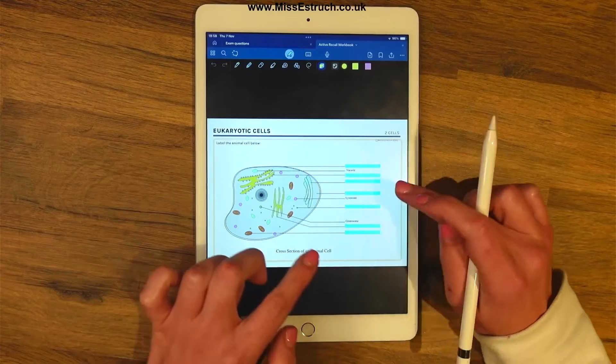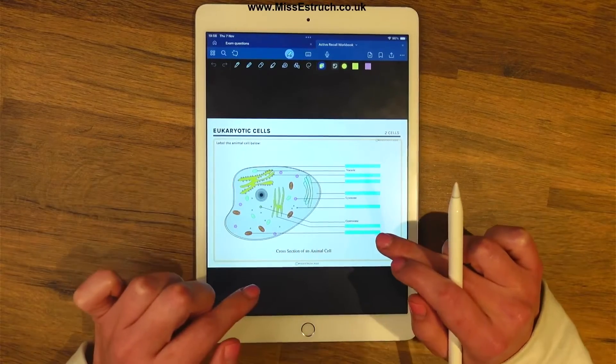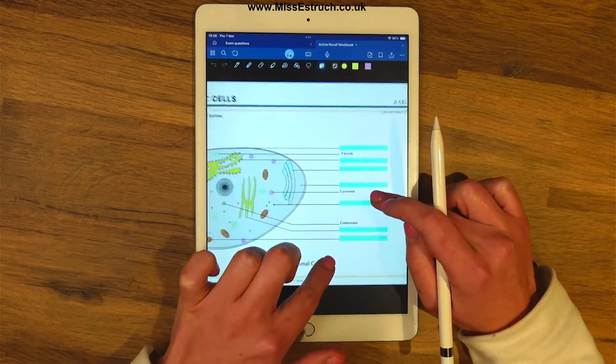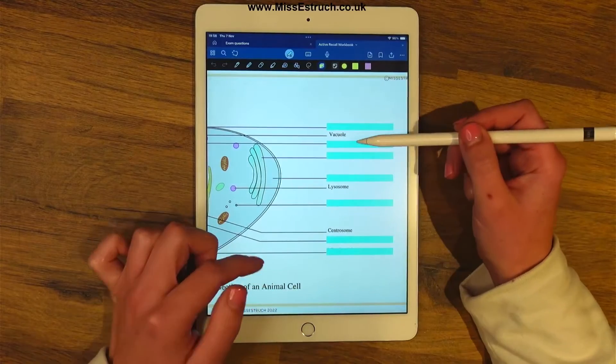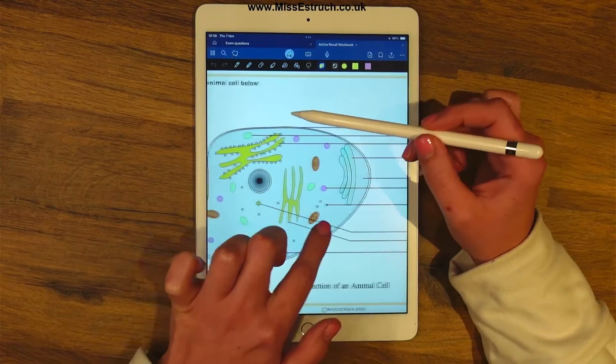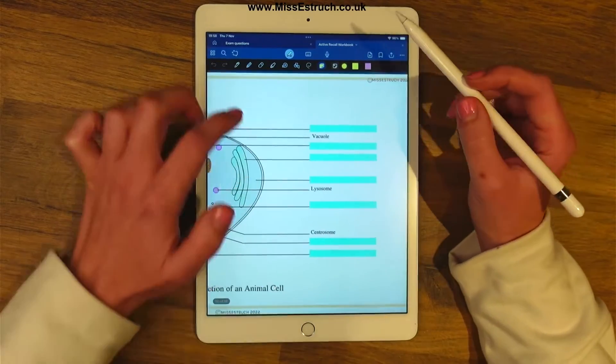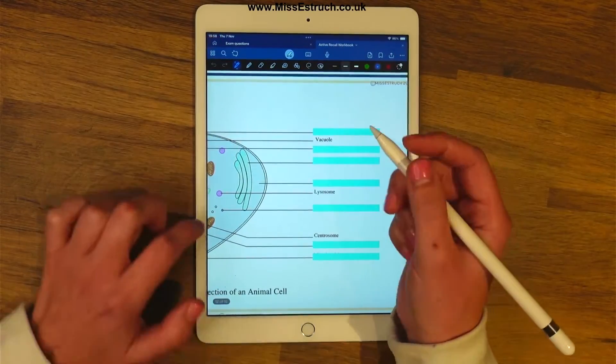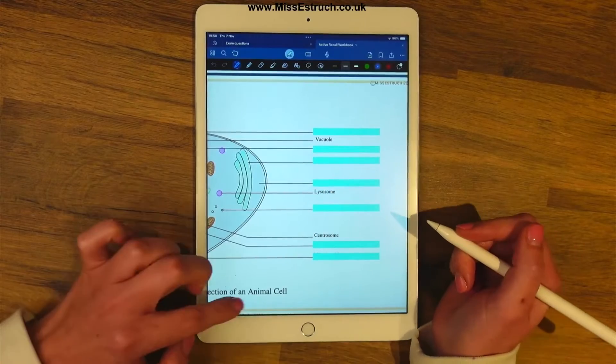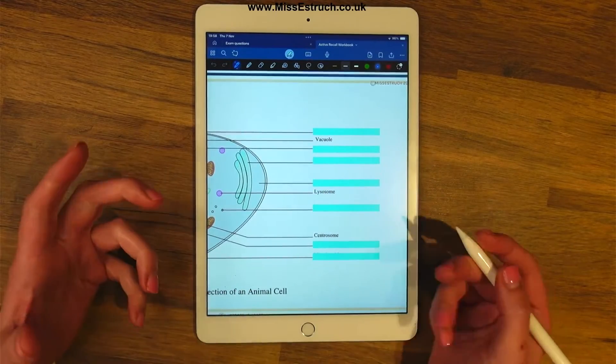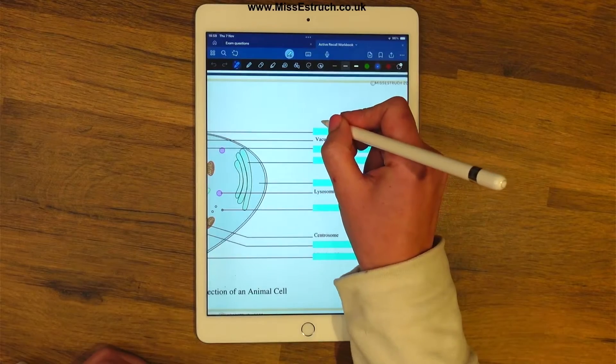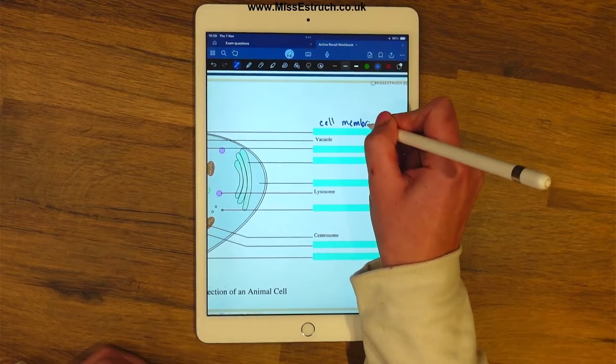I'm going to zoom in a bit so you can see this clearly. We need to label these different structures. So this first one is pointing to this top layer here. Let me just add it in. So if it's the outer membrane and it's an animal cell, the most outer layer, that must mean it is a cell membrane.